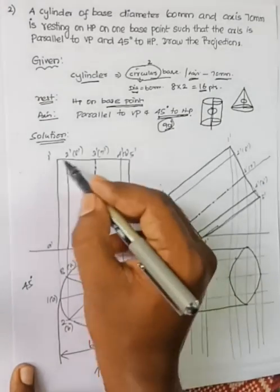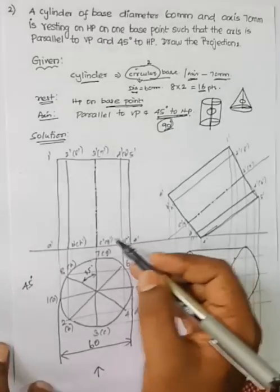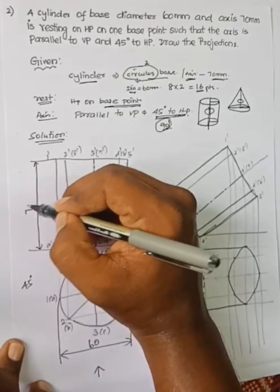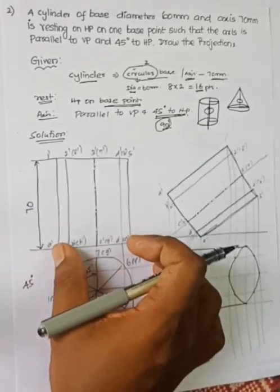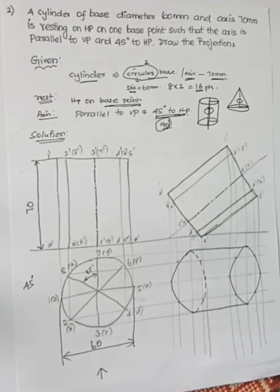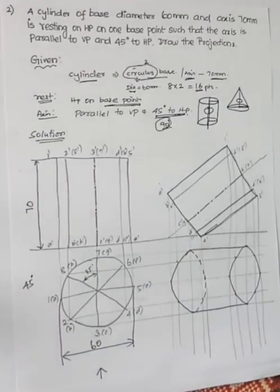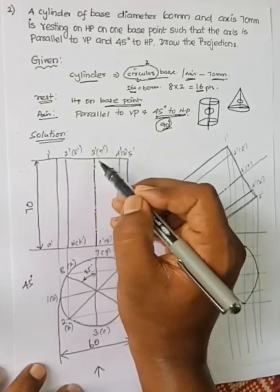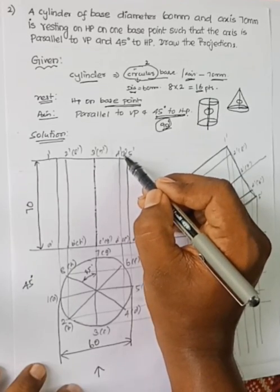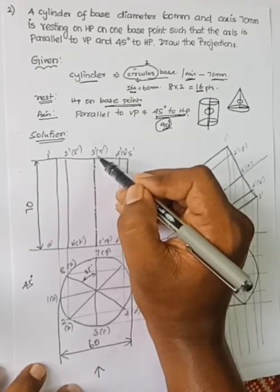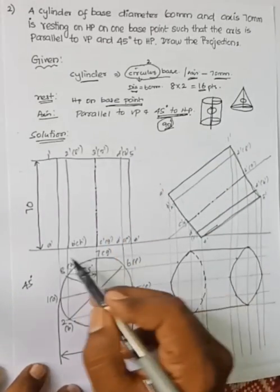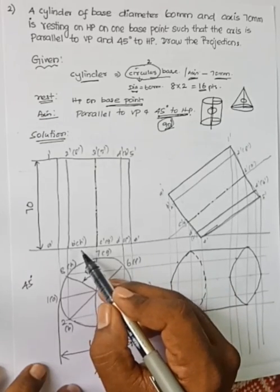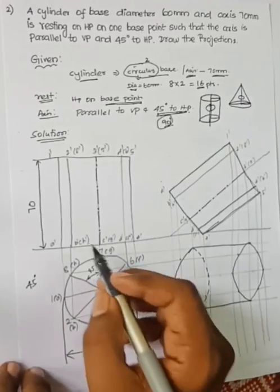When viewed from the front, we draw a rectangle of height 70 mm and width equal to the diameter, 60 mm. In the front view, the visible half shows points 1', 2', 3', 4', 5' visible, while 6' is behind 4', 5' behind 3', and so on. For the base, A', B', C', D', E' are visible while F', G', H' are hidden and placed in brackets.